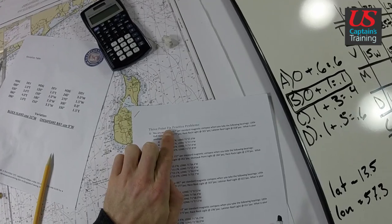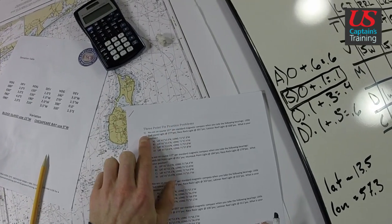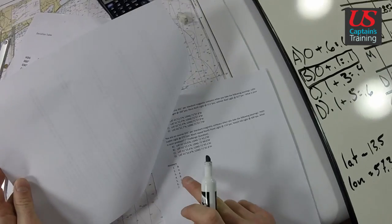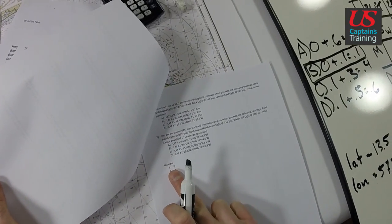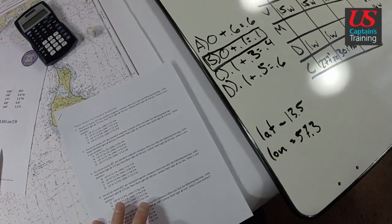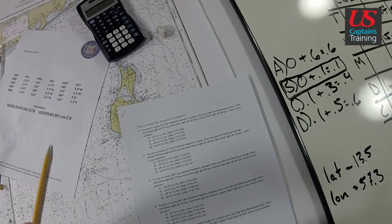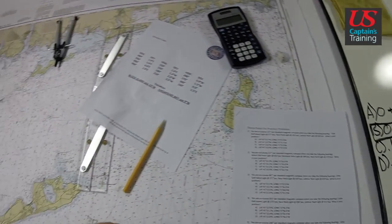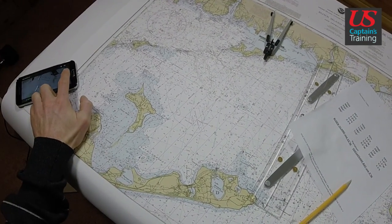So three point fix practice problem one, we're saying the answer is B. Let's check our answers. Three point fix practice problem one is B. That is the correct answer. And there's practice problems two and three after this one if you want more help.